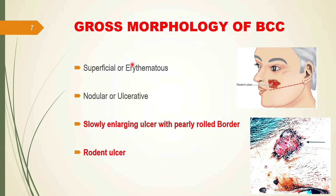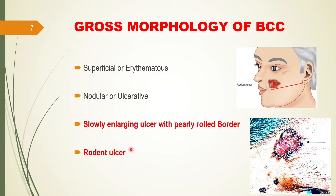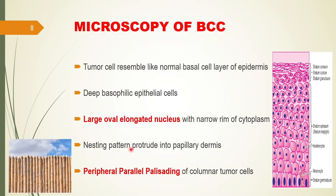It could be superficial or deep - if it is infiltrated it is deep. The nodulo-ulcerative is the main presentation: initially there is a nodule and gradually it ulcerates. It is a slowly enlarging ulcer with a rolled-out border, also known as a rodent ulcer. This is the gross morphology of basal cell carcinoma.